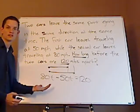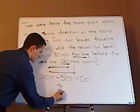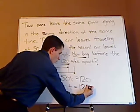And so then you just solve for t. You have 80 minus 50, which is 30, so that would make it 30t equals 120.